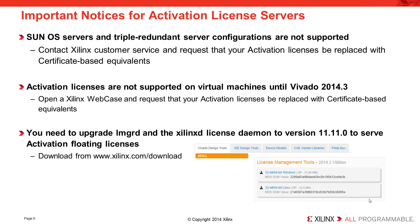You can get the updated tools from www.xilinx.com/download. Go to Vivado Design Tools, pick the version you require, and scroll to the bottom of that screen to find License Management Tool Utilities. You only need to download the utilities — you don't need to download all of Vivado to get the license management tools.